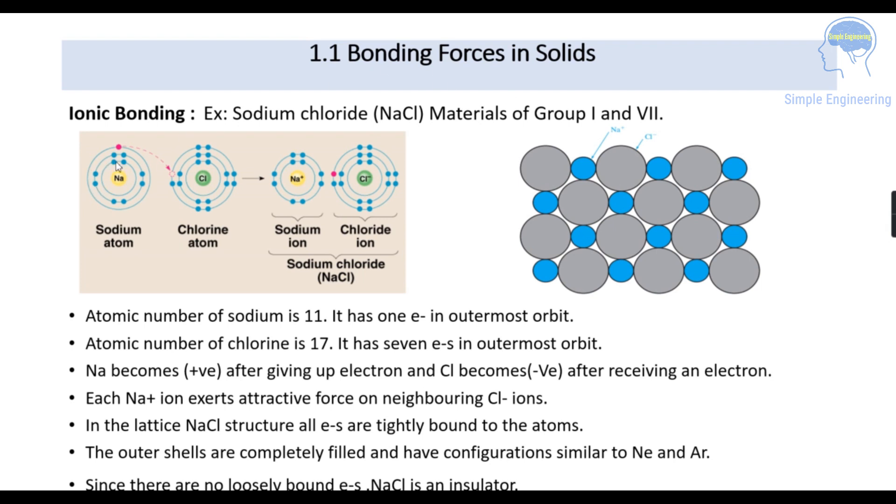The sodium atom has an atomic number of 11. The first orbit contains two electrons, second orbit has eight, and the last orbit has only one. Chlorine, with atomic number 17, has seven electrons in the outermost orbit. Sodium becomes positive after giving up one electron, and chlorine accepts the electron and becomes negative.